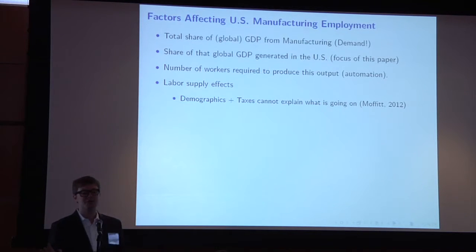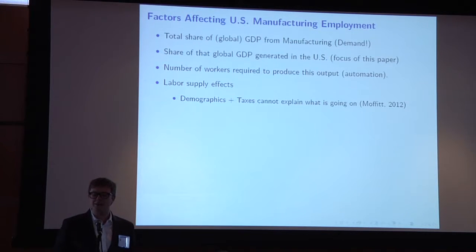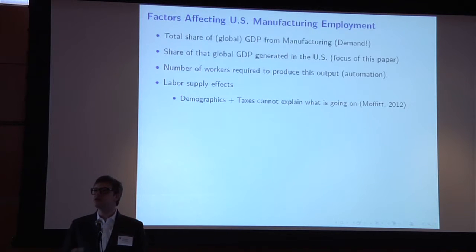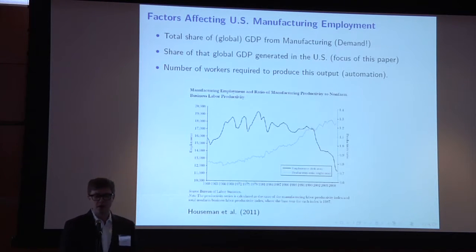Labor supply effects, such as demographics and taxes — popular explanations — have been shown by Robert Moffitt's paper, which David cited at the beginning, to not really be key factors of what's going on.